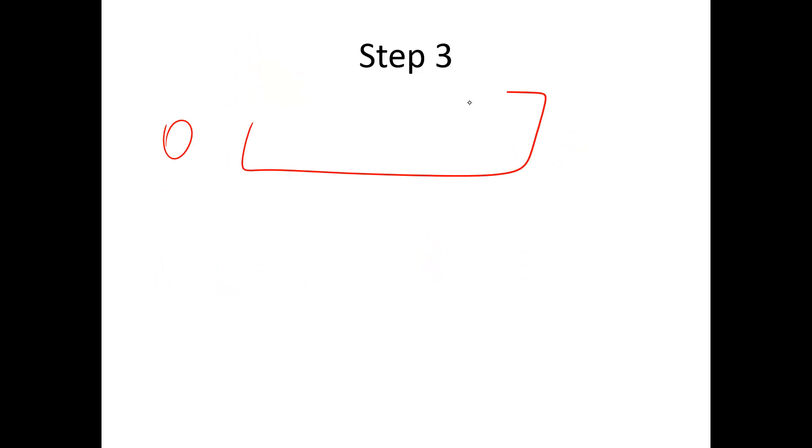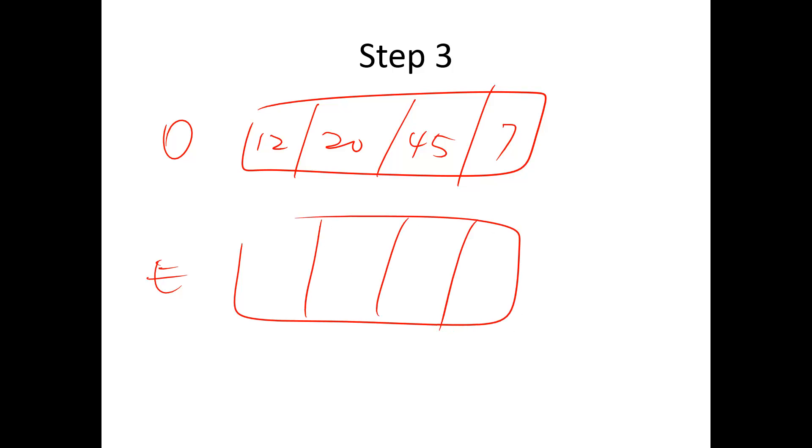So step three is to write down your O and E values. So I got 12, 20, 45, and 7. My E here, I would expect them all to be equal. So the grand total out here is 84, I think if I've done my math correctly.